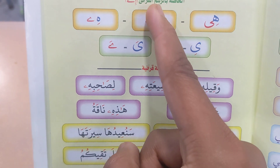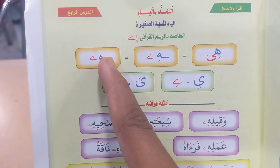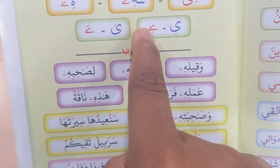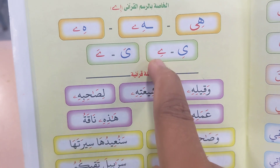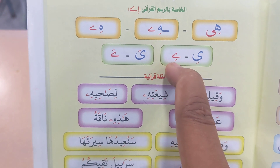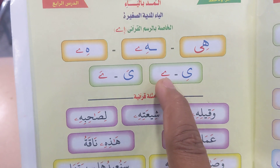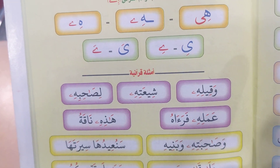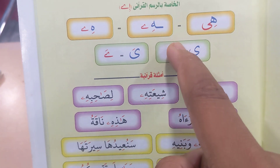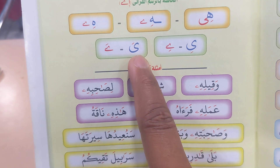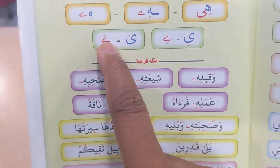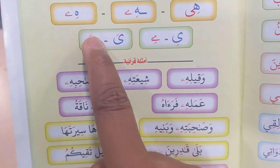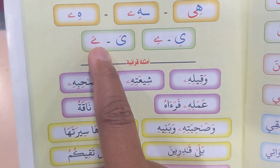After the Ha you also have the round Ha. This is Ya Sagheera. Why is it Ya Sagheera? Because it has a Fatiha. So it is Ya Sagheera — it is not a Maddiya. Why is it not a Mad? Because it has a Fatiha. So it's Ya Sagheera with Fatiha.